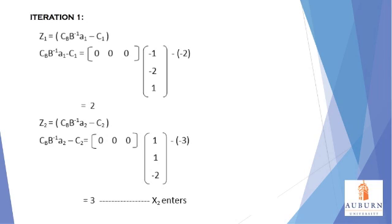Since we are minimizing the objective function, a positive value here means that the solution is not optimal. We now need to choose a decision variable that should enter the basis. We want to choose the variable that will help the objective function value the most, which would be the most positive number. In this case, X2 has the greatest reduced cost value.